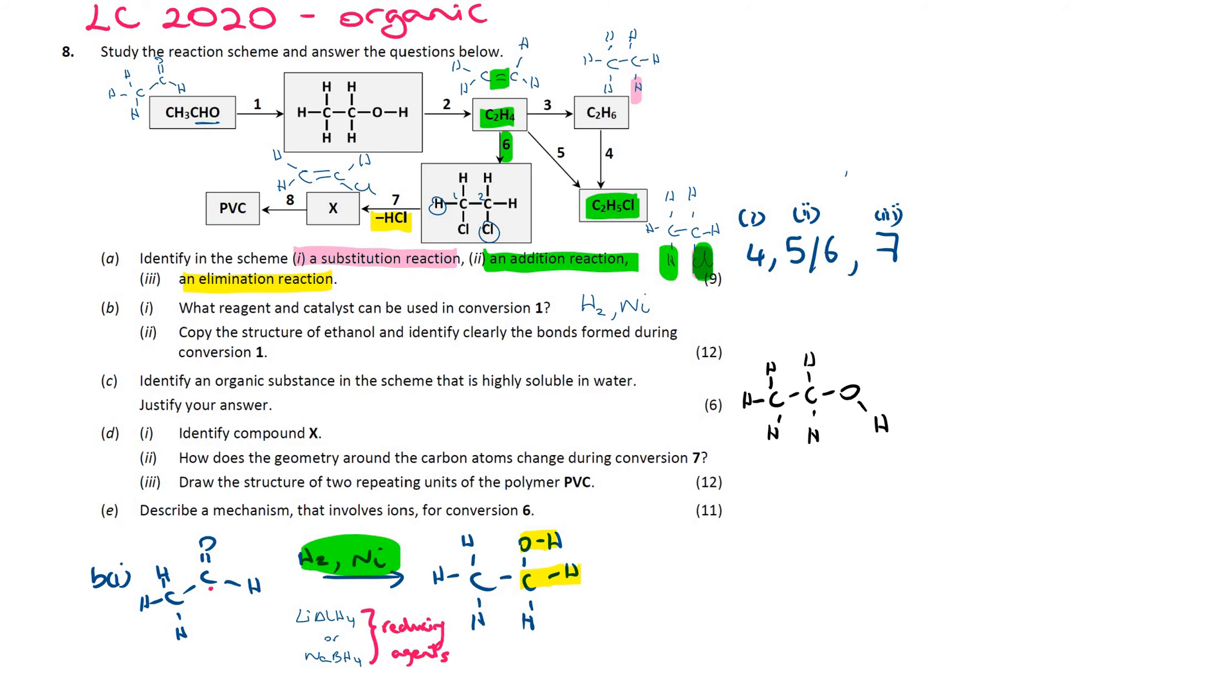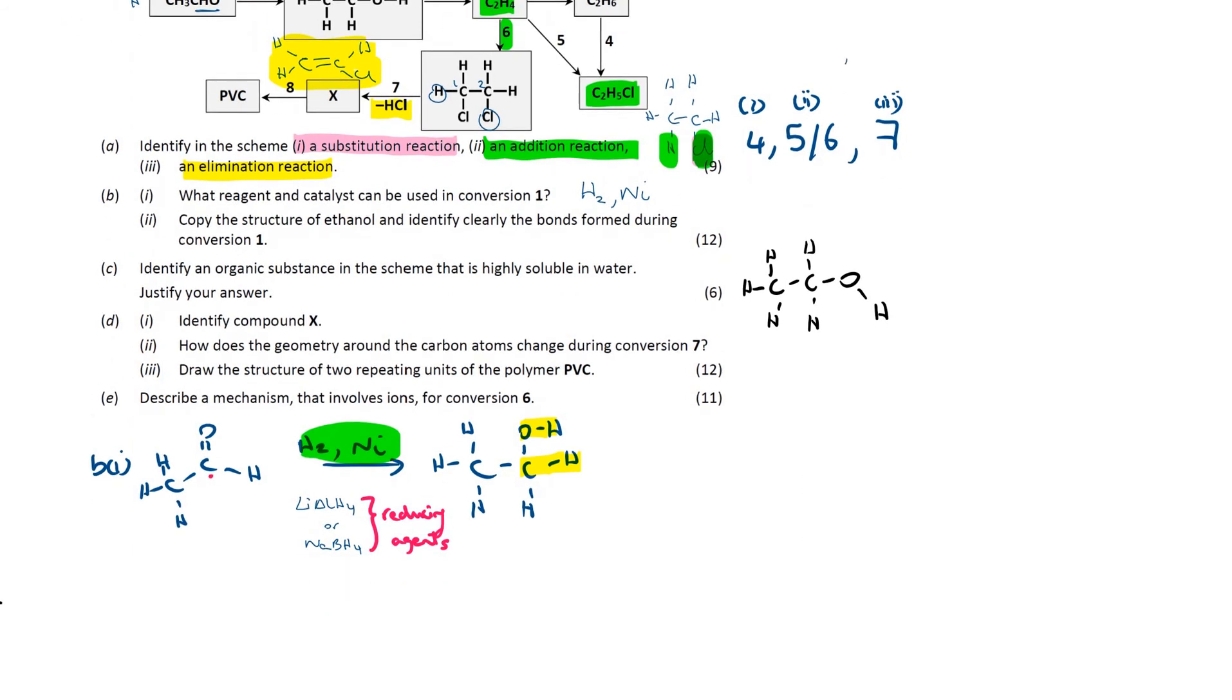It says to identify compound X next, and I've already done that here. Compound X is just an alkene. So, this is D part 1. An alkene formed from the elimination of HCl from 1,2-dichloroethane. So, that's the alkene there. It is chloroethene, or the old name for it was vinyl chloride. Hence, the name polyvinyl chloride for the polymer.